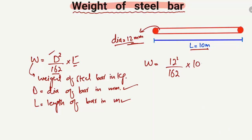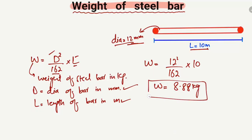We don't need to write out the units here, as the weight will be directly in kilograms. If you multiply and divide accordingly, we get the weight as 8.88 kilograms. This is the weight of the steel bar when the diameter is 12 millimeters and the length is 10 meters.